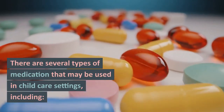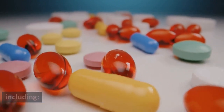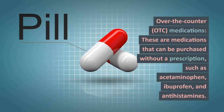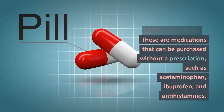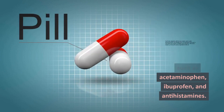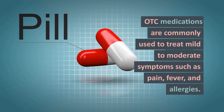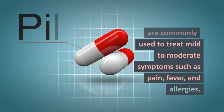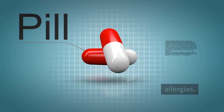There are several types of medication that may be used in child care settings, including over-the-counter (OTC) medications. These are medications that can be purchased without a prescription, such as acetaminophen, ibuprofen, and antihistamines. OTC medications are commonly used to treat mild to moderate symptoms such as pain, fever, and allergies.